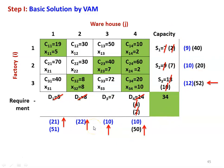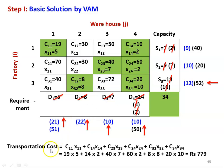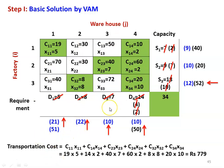The allocation is complete. The allotments are: X11 equal to 5, X14 equal to 2, X23 equal to 7, X24 equal to 2, X32 equal to 8, and X34 equal to 10. All demands are satisfied and all supply capacities are exhausted. The transportation cost is C11·X11 + C14·X14 + C23·X23 + C24·X24 + C32·X32 + C34·X34, which equals 19×5 + 14×2 + 40×7 + 60×2 + 8×8 + 20×10 = rupees 779. This is the first basic feasible solution.